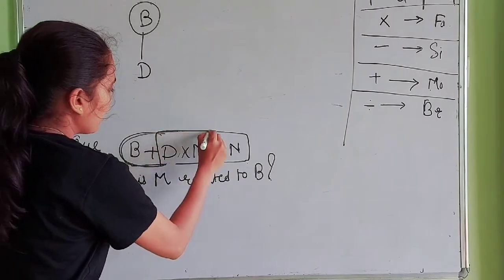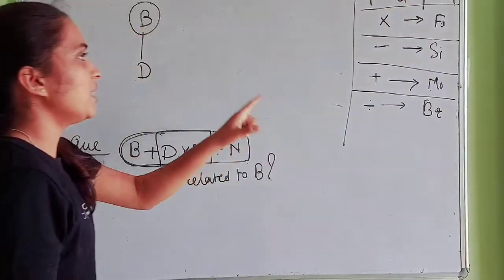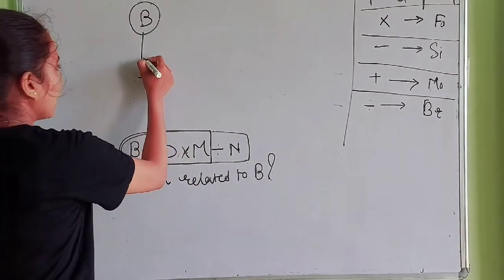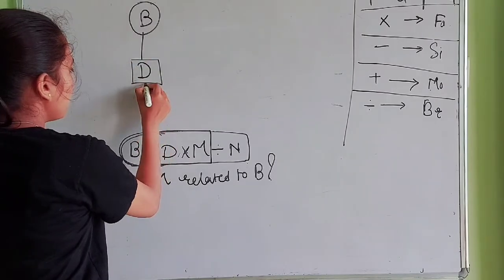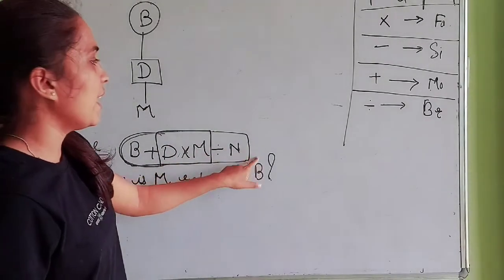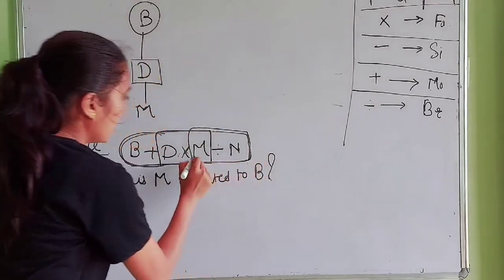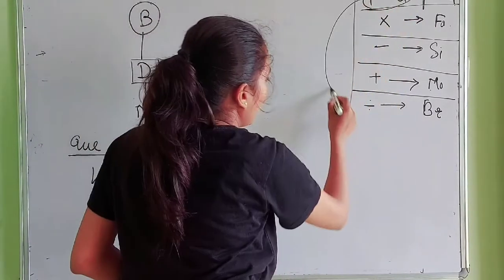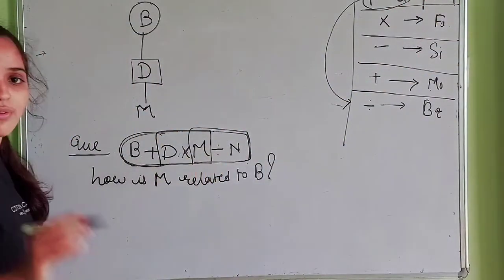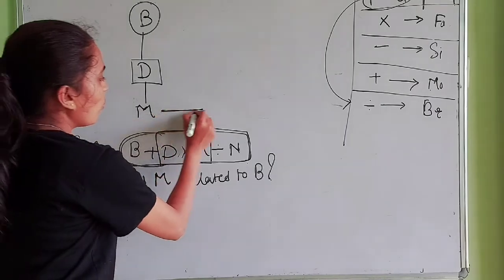The next part is D × M. P × Q shows that P is father of Q, so D × M shows that D is father of M. Then M ÷ N — P ÷ Q shows that P is brother of Q — so M is brother of N. Brother-sister relationships are shown by a horizontal line, so I put a horizontal line between M and N.